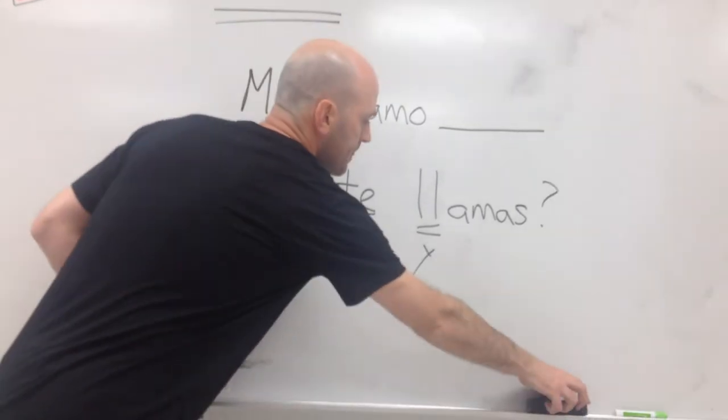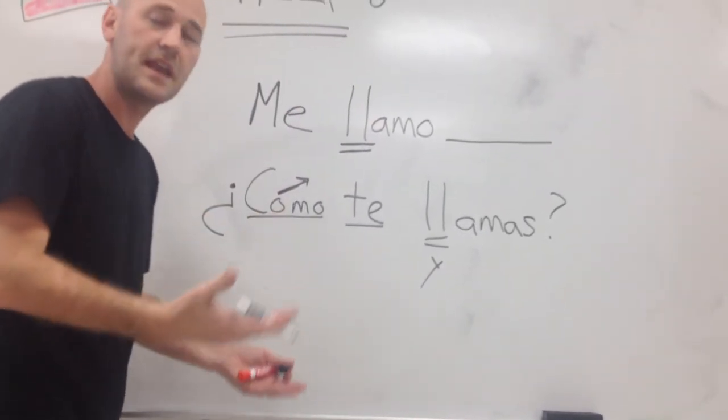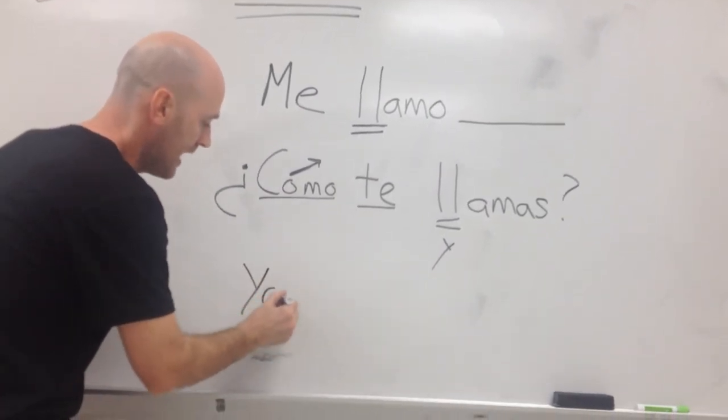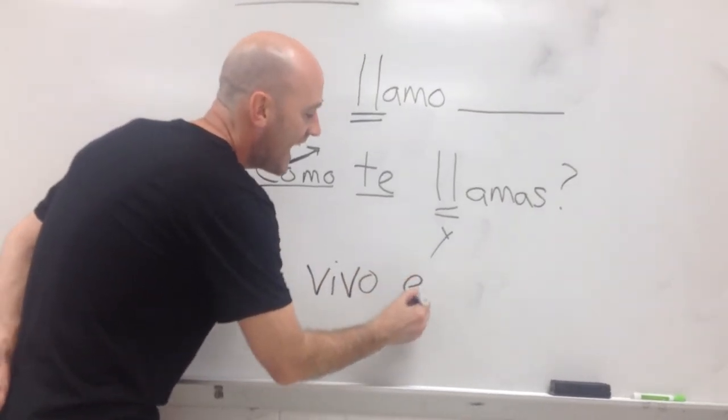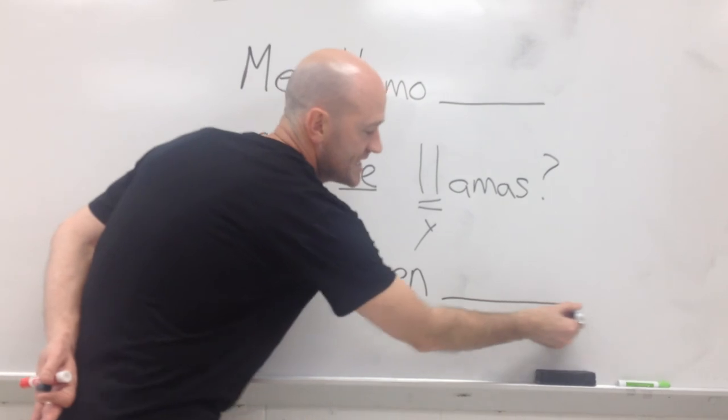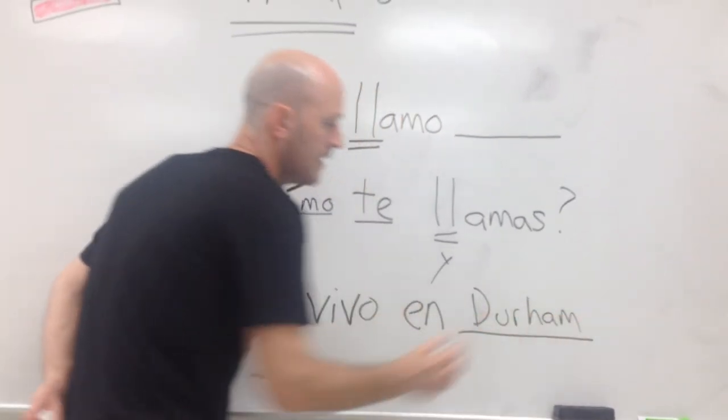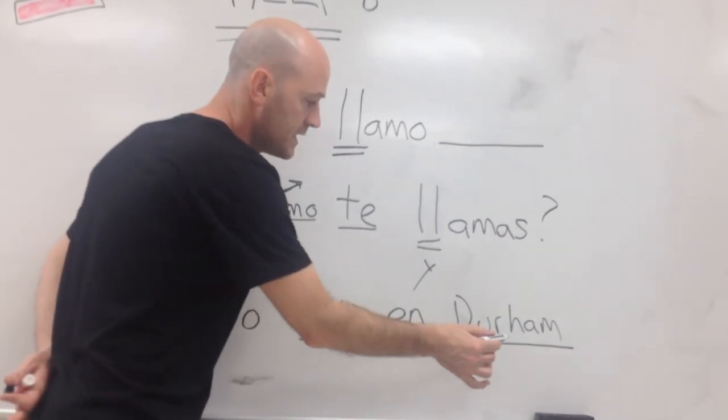Thirdly, I want you to say I live in, and then name your city. For example, we're in Durham. Yo, I, vivo, vivo, en, and then your city here, Durham. That means I live in Durham.